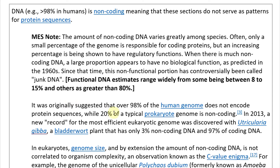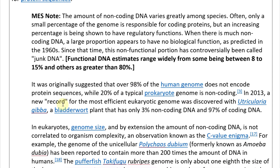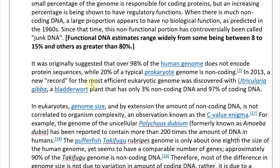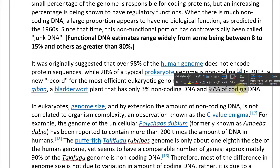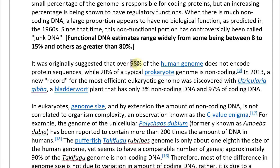Originally over 98% of the human genome was found not to encode protein sequences, while 20% of a typical prokaryotic genome is non-coding. In 2013, a record for the most efficient eukaryotic genome was discovered: the bladderwort plant Utricularia gibba has only 3% non-coding DNA and 97% coding DNA. This contrasts sharply with humans at 98% non-coding. In eukaryotes, genome size and amount of non-coding DNA are not correlated to organism complexity — an observation known as the C-value enigma.